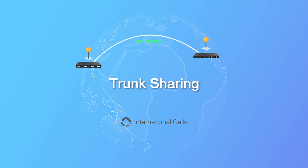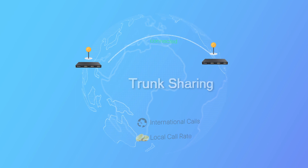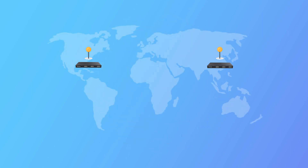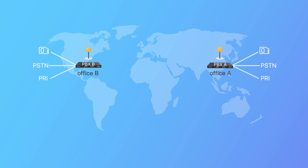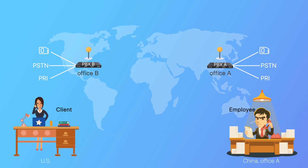With this feature, we can easily make international calls at the local call rate. Suppose you have set up a company with two offices, one in China and the other in the US. Each office has been equipped with an S-series PBX connected to local physical trunks like a SIM card, PSTN, and PRI. If employees in China want to make a call to clients in the US, we can save the cost of the international call rate through the shared trunk between two offices, sharing the local trunk resources in the US — essentially calling at the US local rate indirectly.